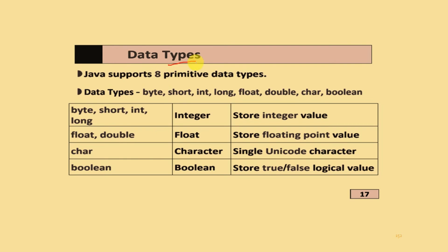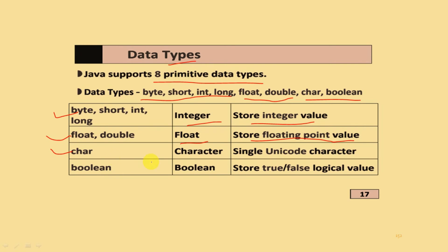Data types: there are eight primitive data types available in Java programming - byte, short, int, long, float, double, char, and boolean. The first four (byte, short, int, long) are integer types and store integer values. Float and double store floating-point values. Char stores a single Unicode character. Boolean stores a true or false logical value.